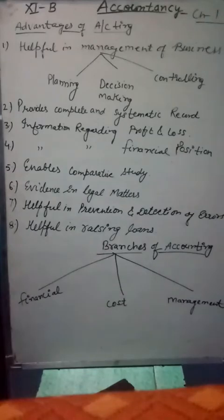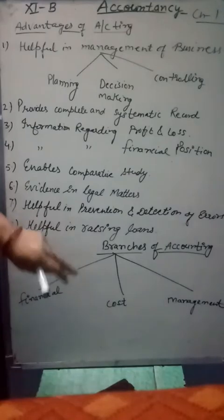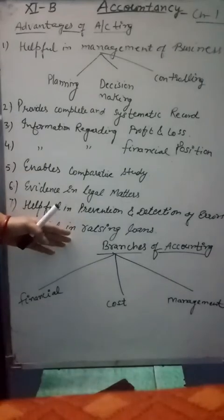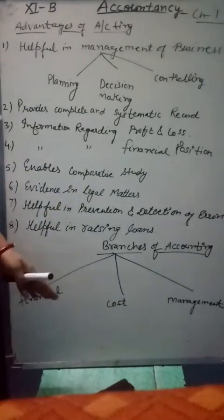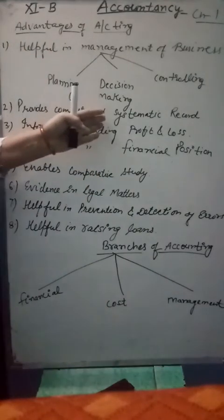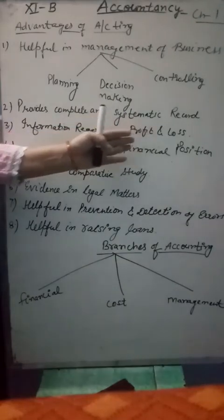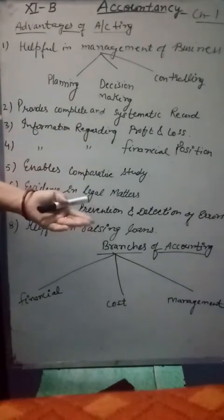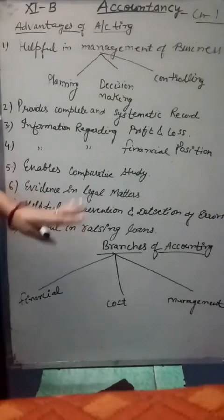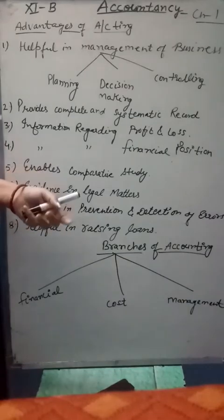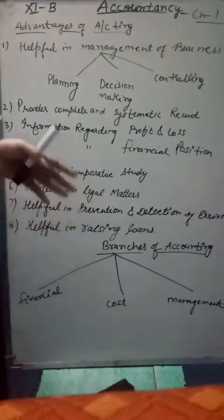Financial accounting: the main purpose of this branch is to record business transactions in a systematic manner, to ascertain profit and loss, and to present the financial position of the business for the accounting period by preparing a profit and loss account and balance sheet. This branch provides information required by management and various other interested parties.